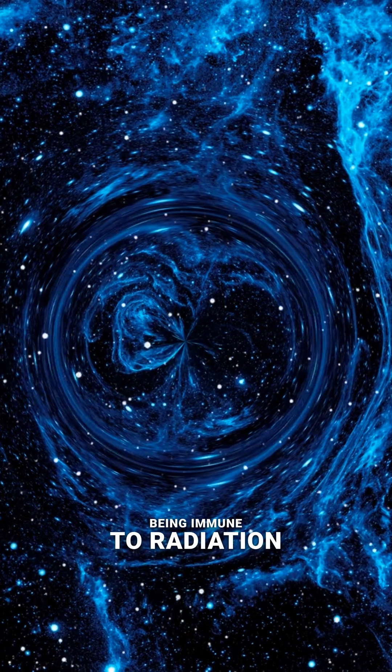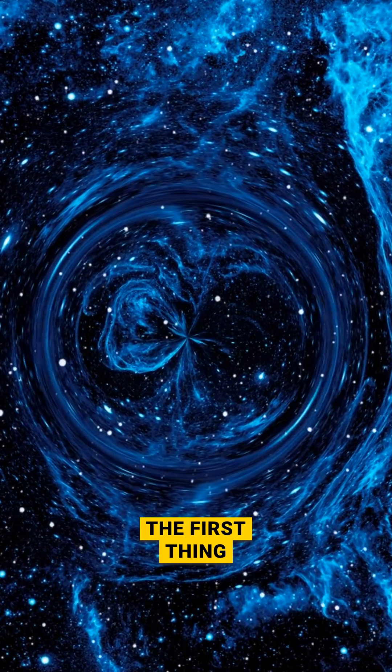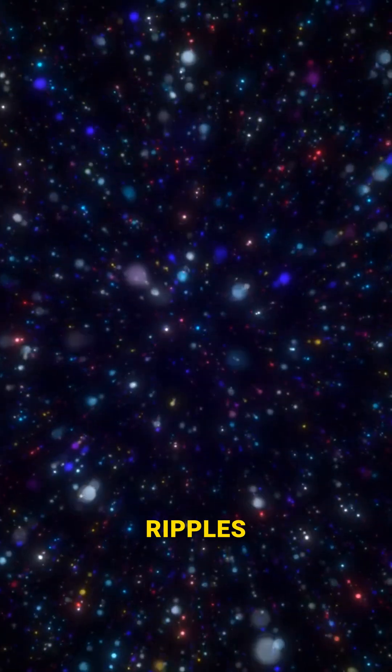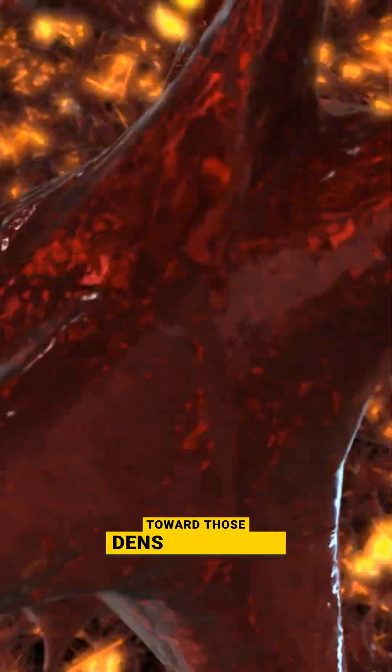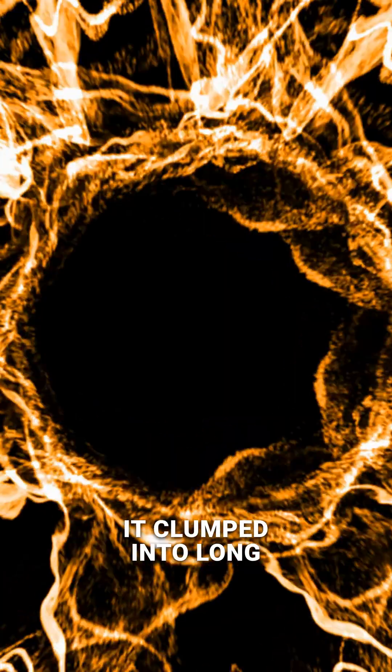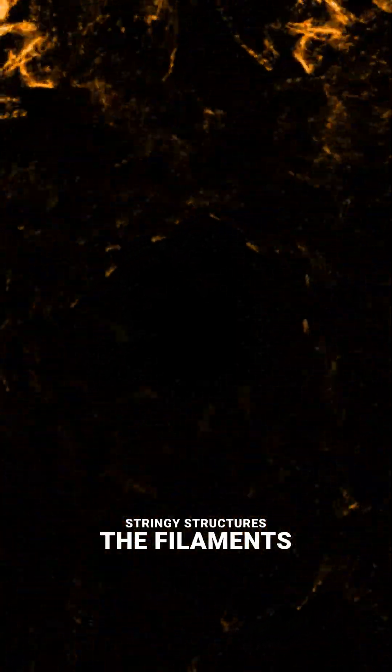Dark matter, being immune to radiation and pressure, was the first thing to respond to these ripples. Over billions of years, gravity pulled dark matter toward those denser regions. It clumped into long, stringy structures—the filaments.